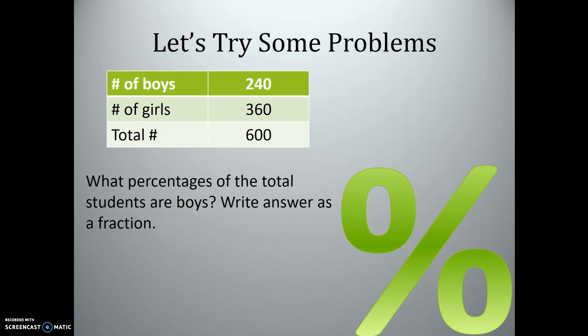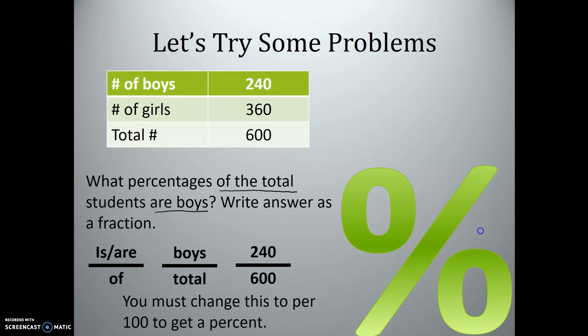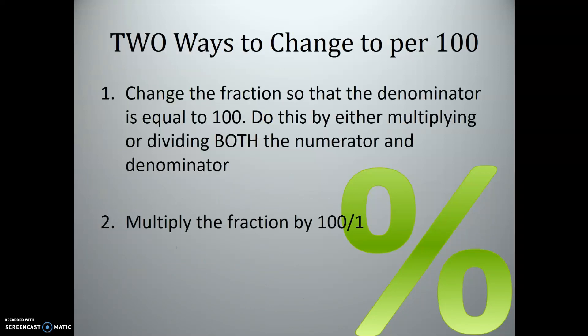Let's try a problem. We have 240 boys, 360 girls, and 600 total kids, and we want to know what percentage of the total students are boys. Let's write our answer as a fraction first. Remember our clue: 'there are over of' from our ratios unit. Total goes on the bottom, boys on the top, so we write 240 over 600. Our percent needs to be 'per 100,' so the denominator always needs to be 100.